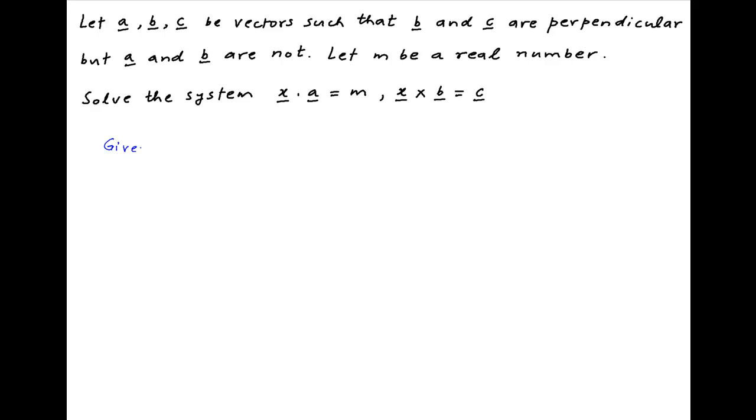We are given that the vector cross product X cross B is equal to the vector C. Now we take the cross product with vector A on both sides.